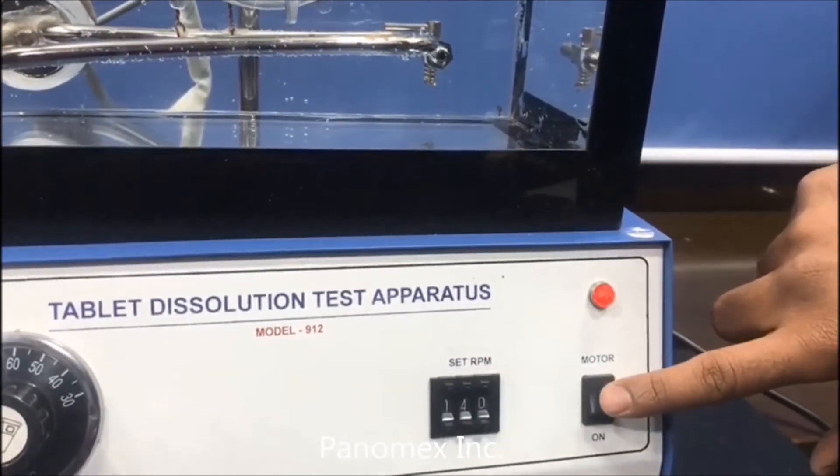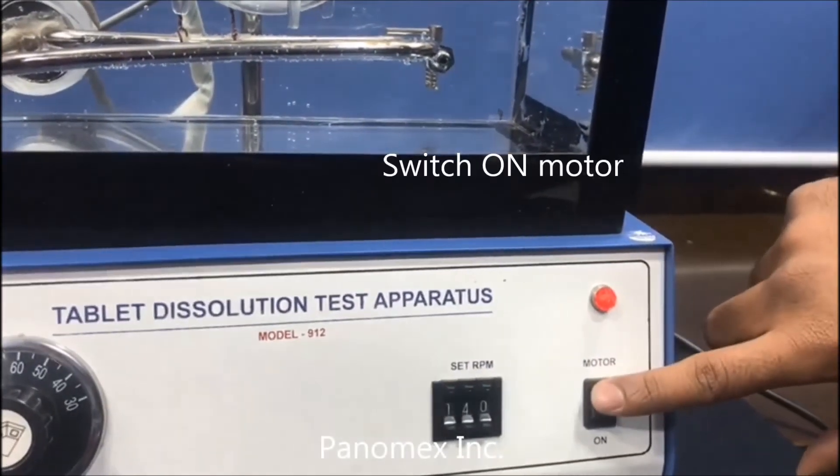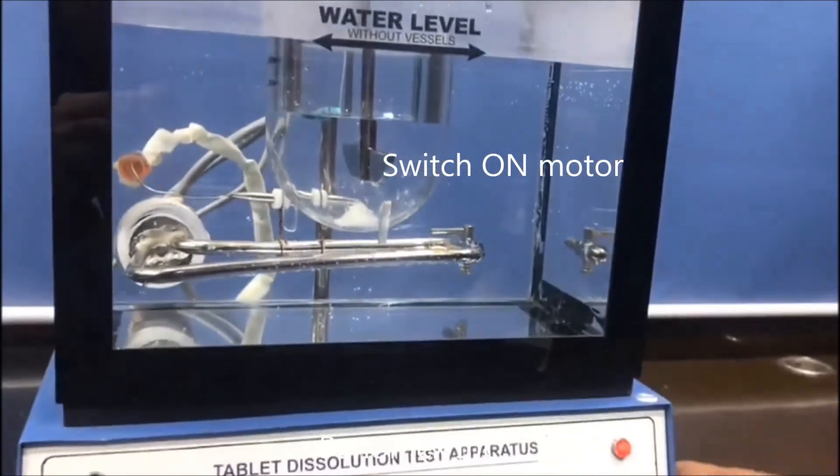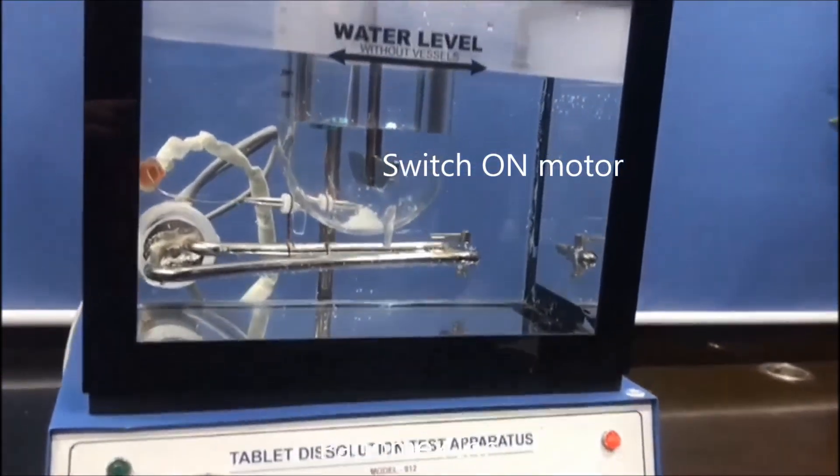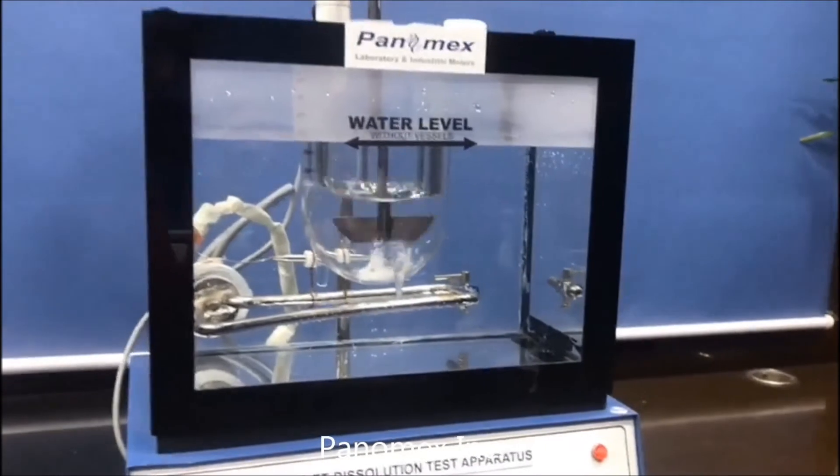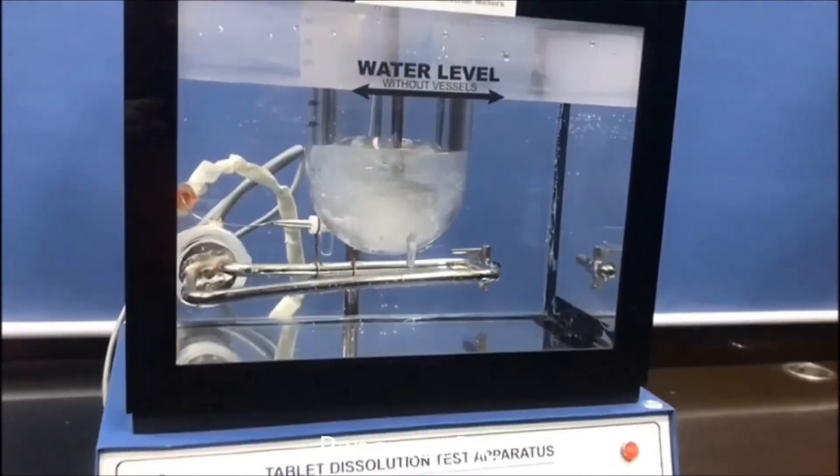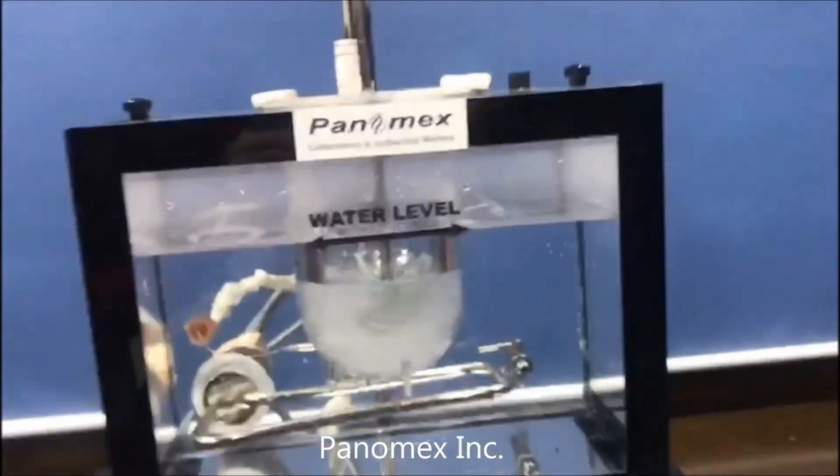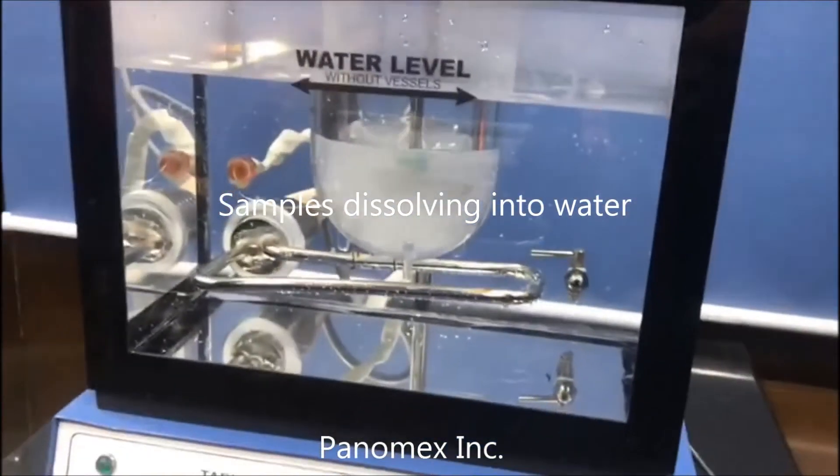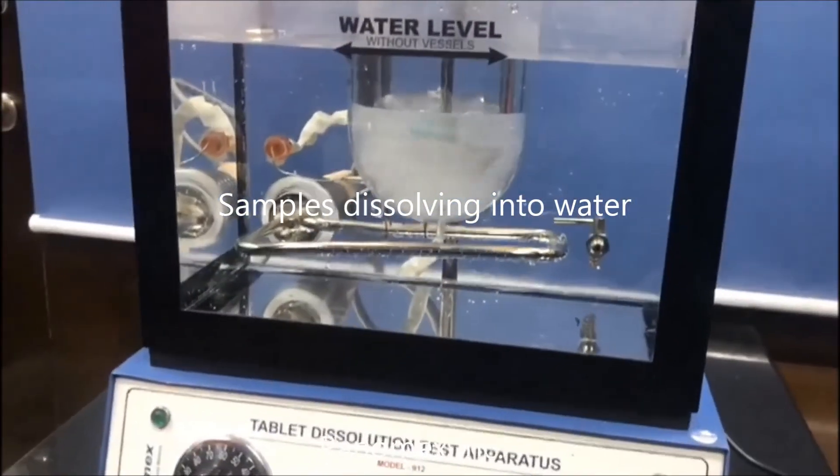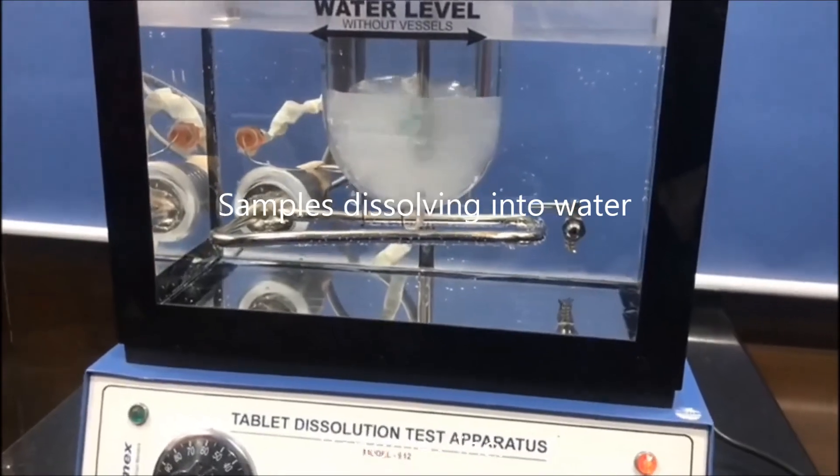And this is the motor switch through which this stirring machine will get started. This is on right now, and as you can see, the machine is now moving and we have set our desired temperature.